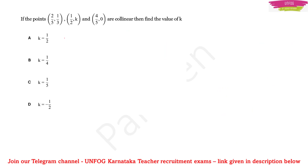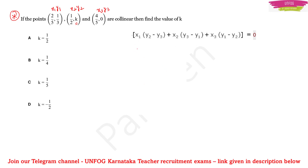An important expected question type gives collinear points with an unknown: coordinates (2/5, 1/3), (1/2, k), and (4/5, 0). Assign x1 y1 = (2/5, 1/3), x2 y2 = (1/2, k), x3 y3 = (4/5, 0). Substituting into the collinearity condition: x1(y2 − y3) + x2(y3 − y1) + x3(y1 − y2) = 0 gives (2/5)(k − 0) + (1/2)(0 − 1/3) + (4/5)(1/3 − k) = 0.